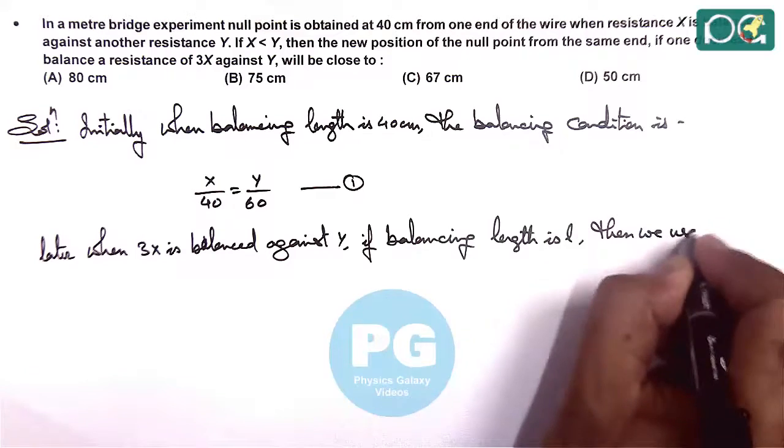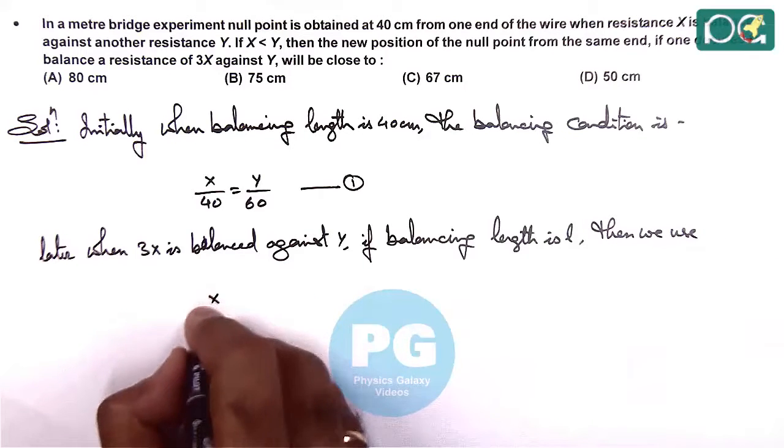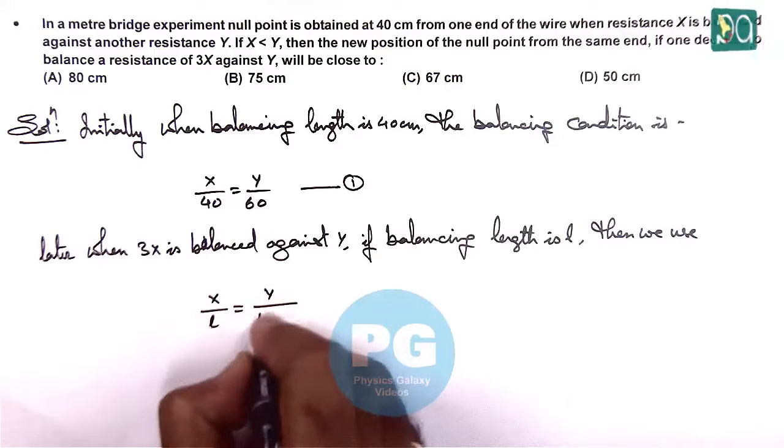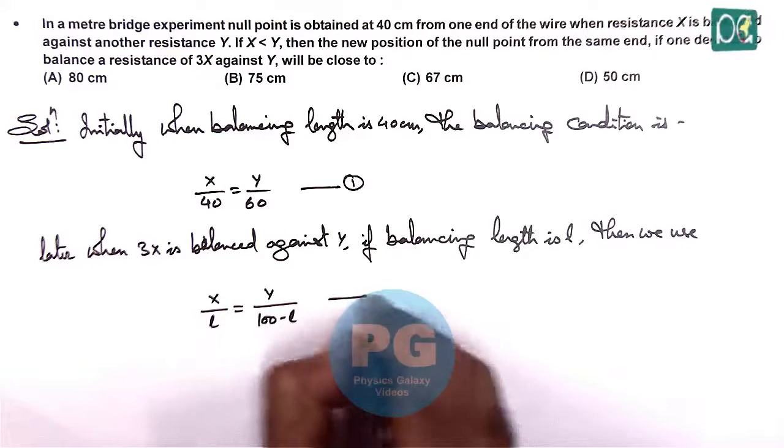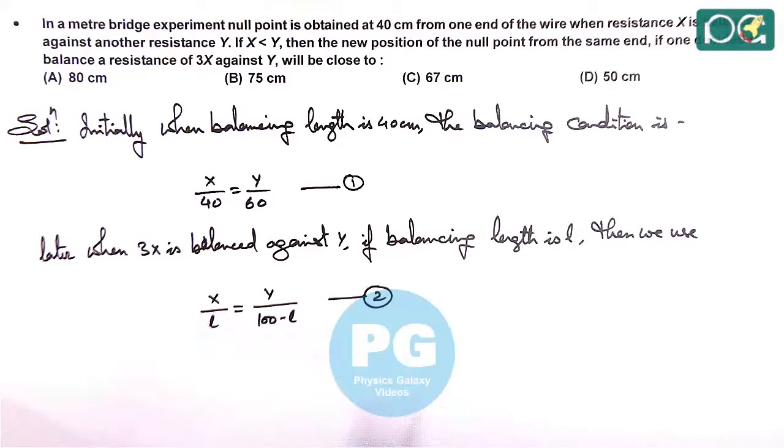then here we use 3x by l is equal to y by 100 minus l, as the total length of meter bridge wire is 100 centimeters.